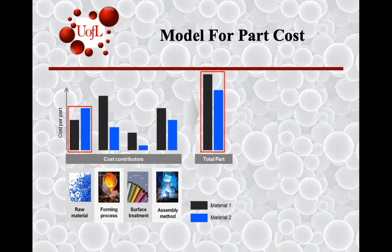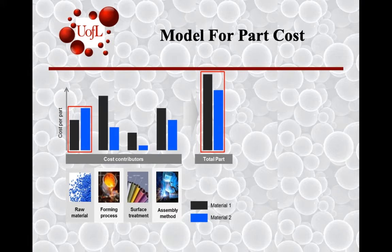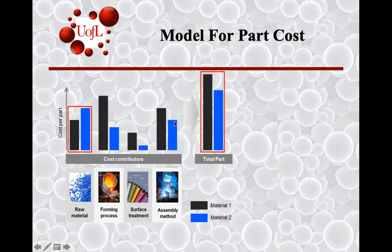If it's a metal, the processing cost can be higher because of operating temperatures required for creating the melt, and the pressures required to push it into a mold can be quite different. The mold costs themselves can be quite different compared to a polymer.